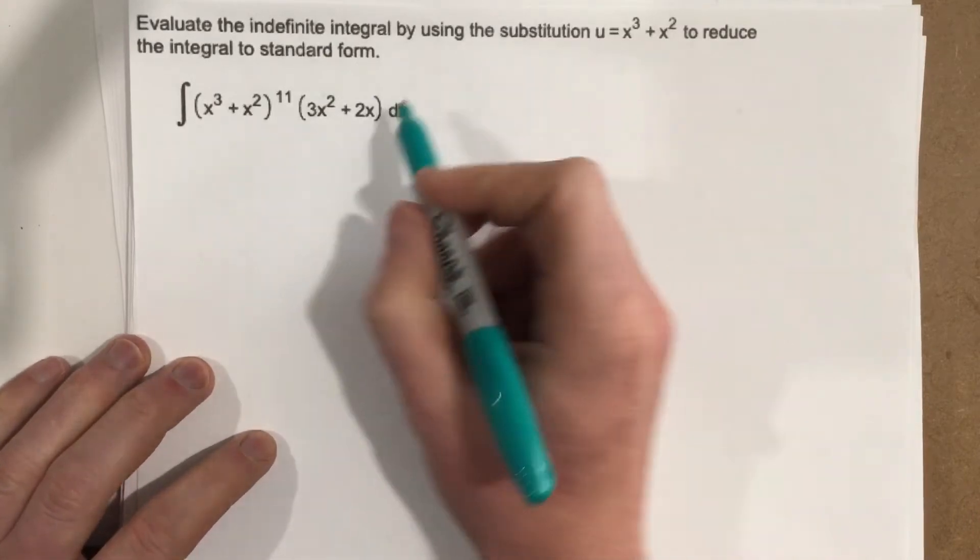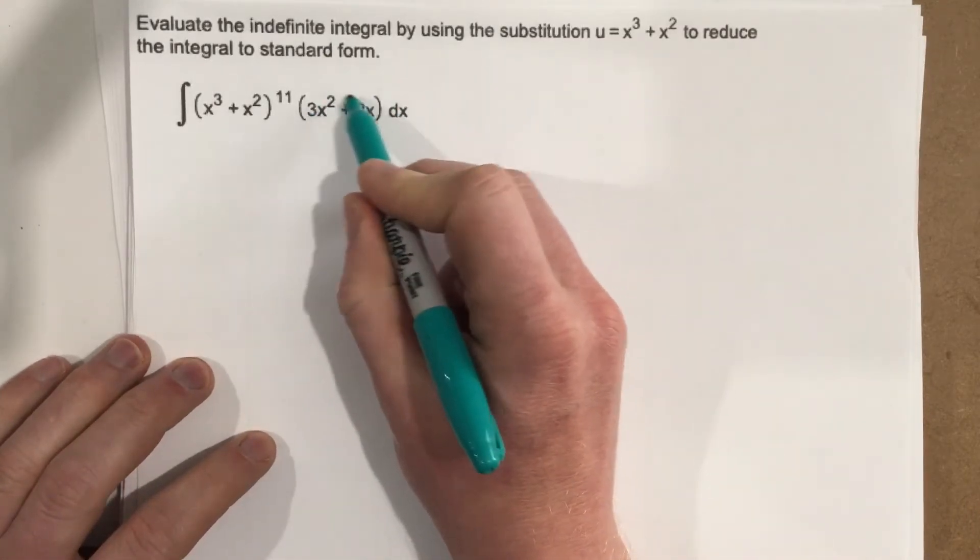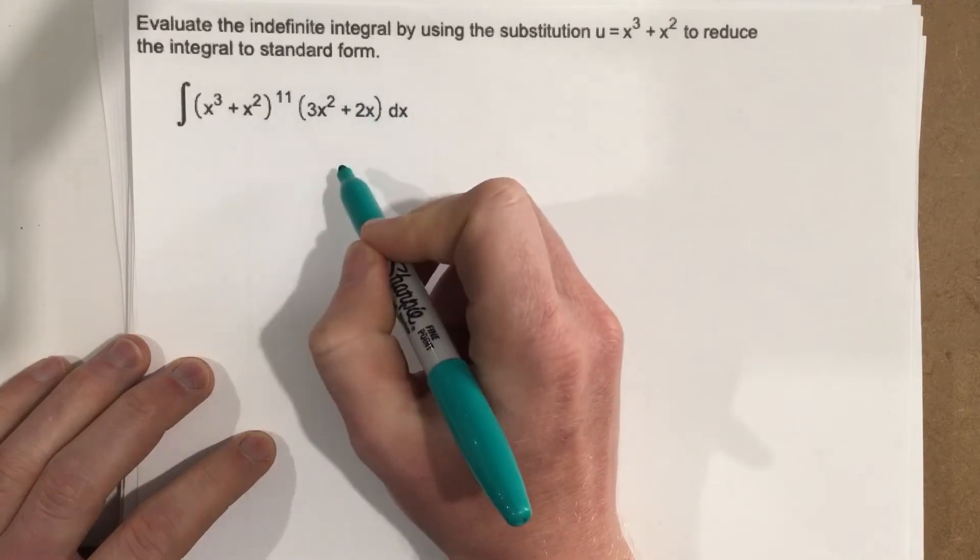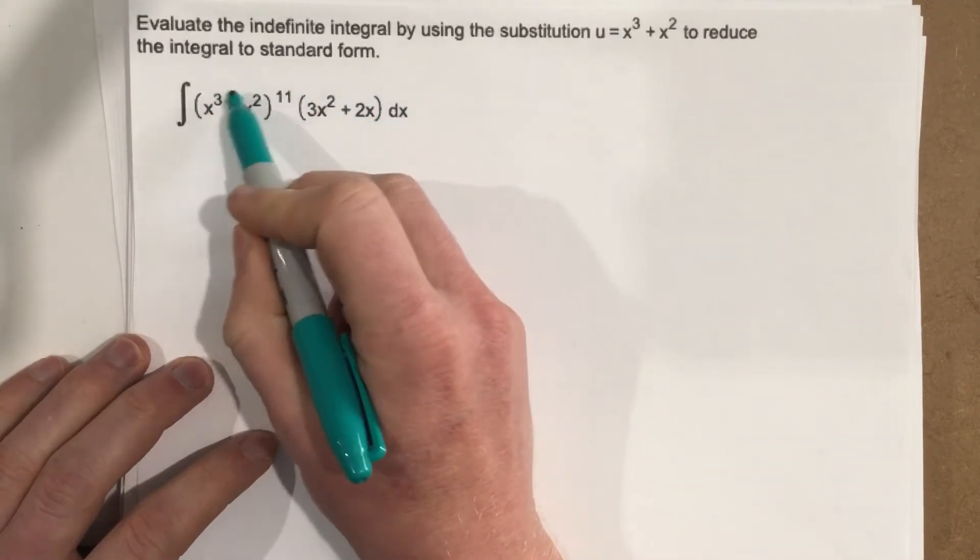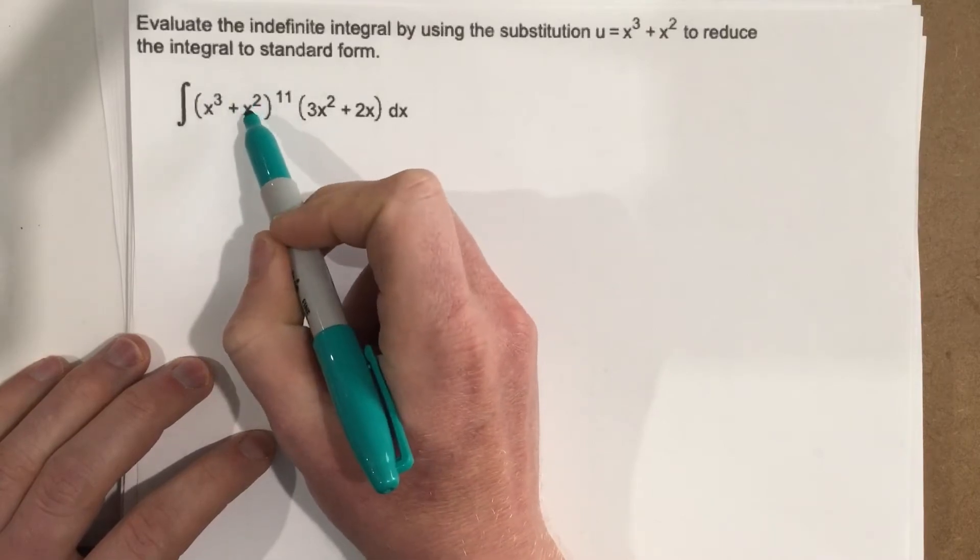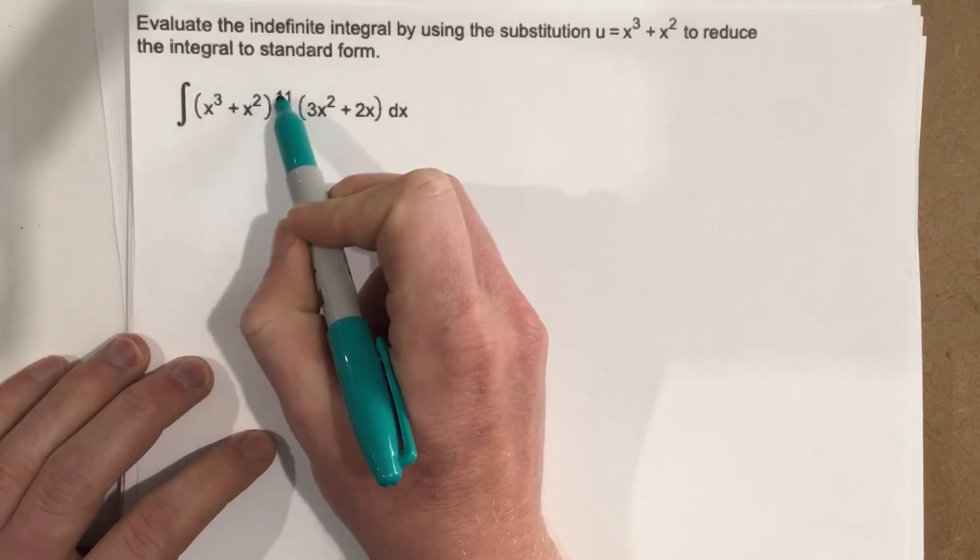So they're giving us that this is going to be our u substitution. And the reason they pick this, there's a couple of reasons. First of all, it has the power to the 11th power.